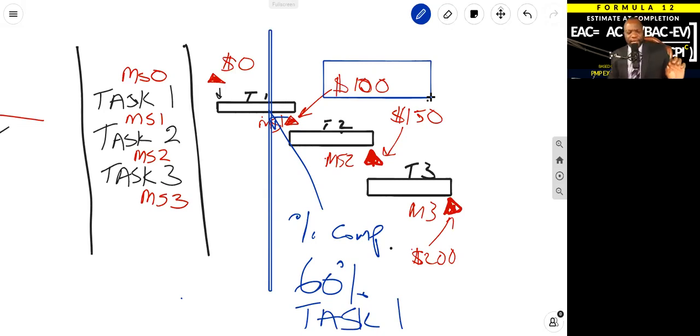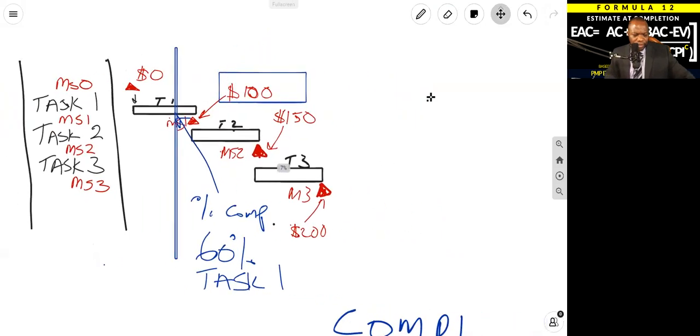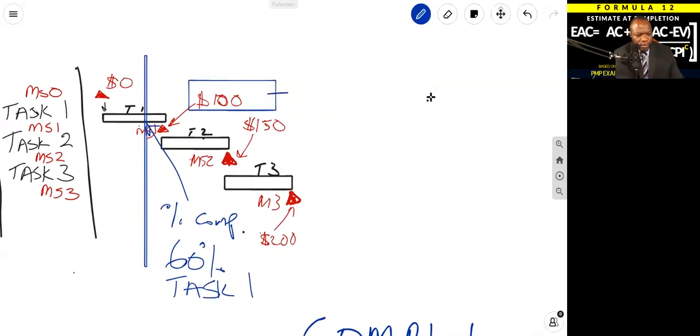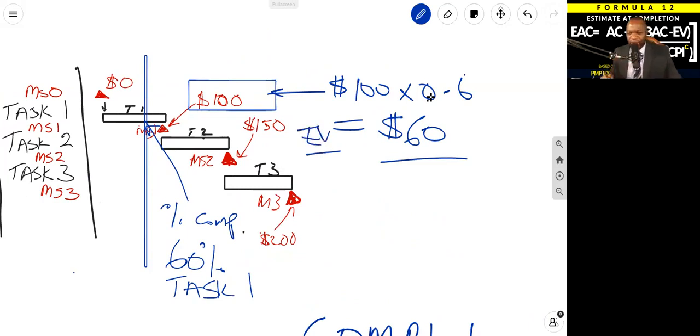If that was the case, we would multiply the $100 attributed to milestone one by 60 percent. So 100 times 0.6, and that would mean at this point in time, we can claim $60 for our earned value. We're talking about earned value in all of this, and that's pretty much how it works.